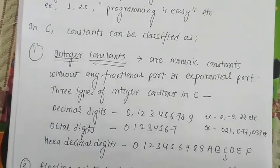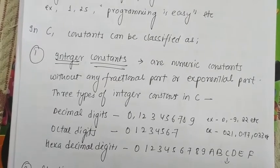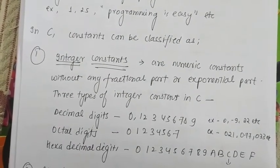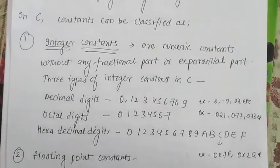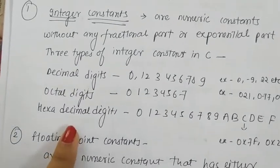First, integer constants. Integer constants are numeric constants without any fractional part or exponential part. There are three types of integer constants.